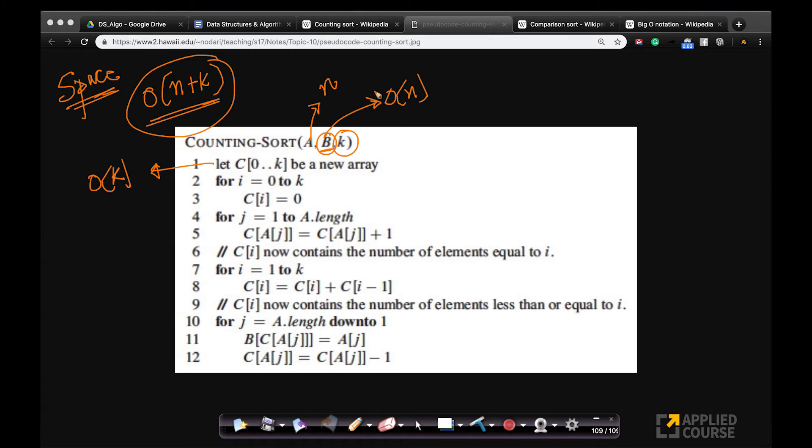If b is given to you, then it is order of k. So there is this small implementation detail that you have to worry about. And if k itself is order of n, then it doesn't matter. Then whether you're given b or not, the total space complexity is order of n, if k is order of n.